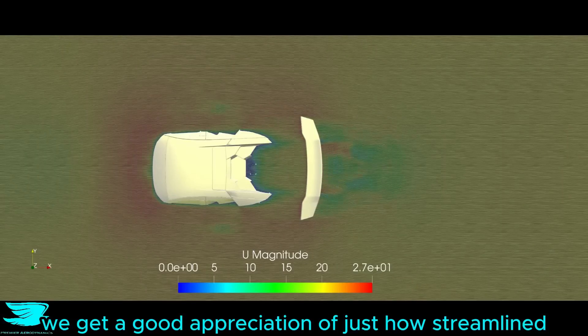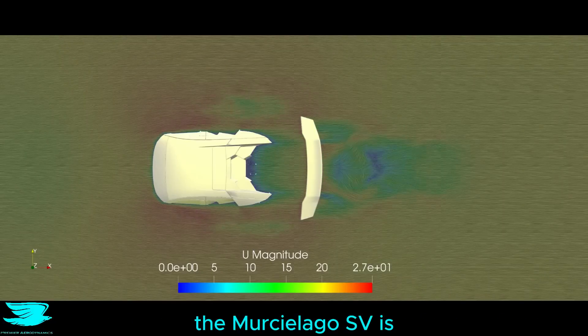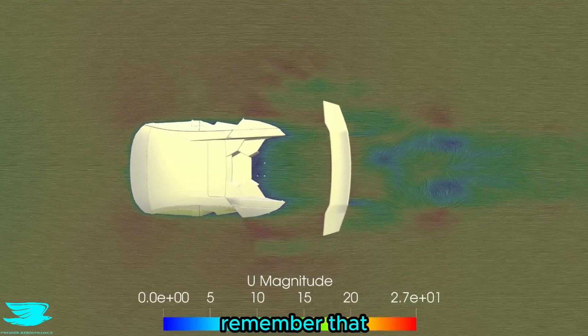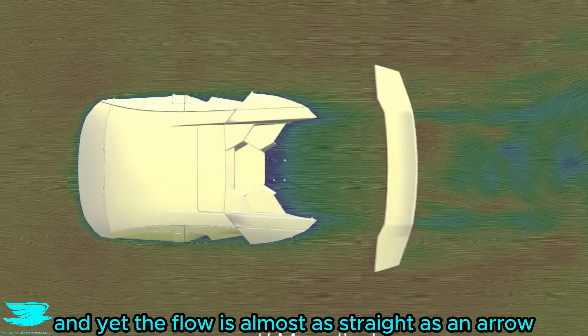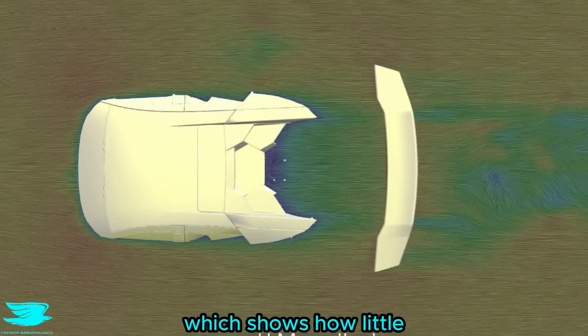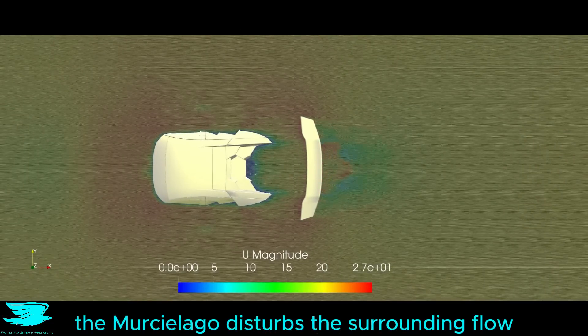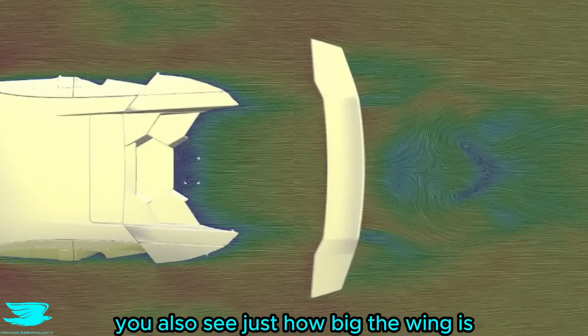From on top, we get a good appreciation of just how streamlined the Murciélago SV is. Remember that this is the extreme version of the baseline Murciélago, and yet, the flow is almost as straight as an arrow, which shows how little the Murciélago disturbs the surrounding flow. We also see just how big the wing is.